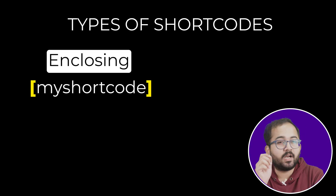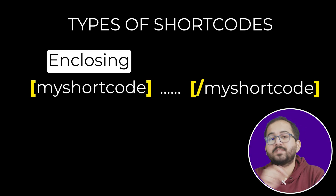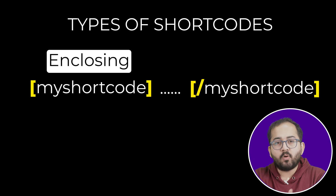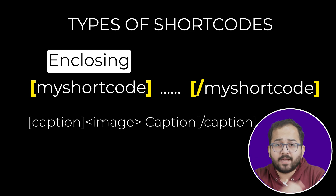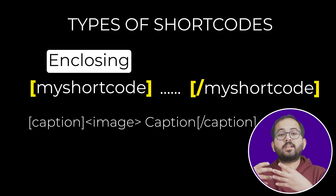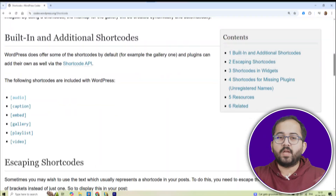Enclosing shortcodes, on the other hand, require both an opening and a closing tag. They are used to wrap content, like the caption shortcode that lets you add captions around your images or other elements.